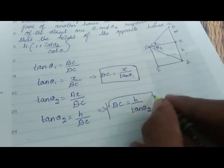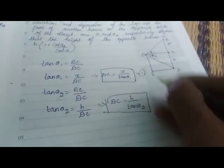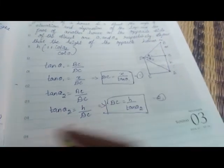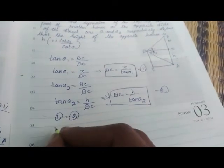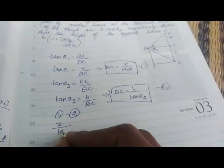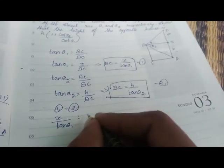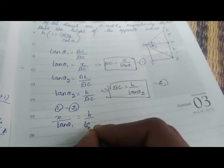Now DC is equal to two values. So one is equal to two. So it is equal to x divided by tan theta2.